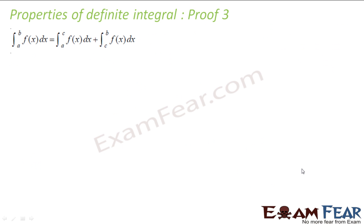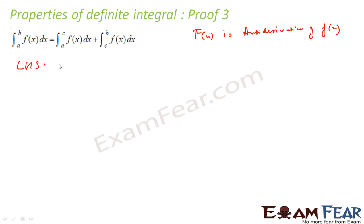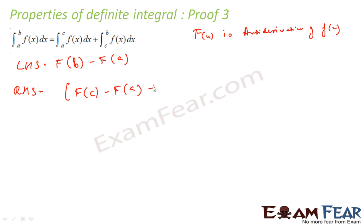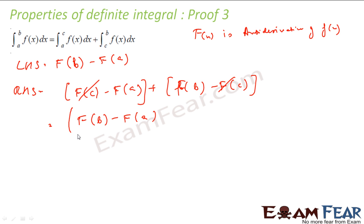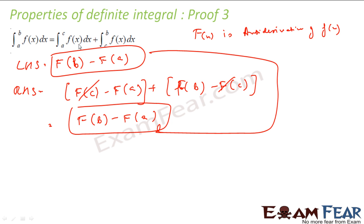Let us take the third proof. The property says the integral of f(x) from a to b equals the integral from a to c plus the integral from c to b. Writing the LHS: if capital F(x) is the antiderivative of small f(x), then by the fundamental theorem, LHS equals F(b) minus F(a). The RHS is [F(c) minus F(a)] plus [F(b) minus F(c)]. The F(c) terms cancel, leaving F(b) minus F(a), which equals the LHS. Therefore LHS equals RHS and the property is true.